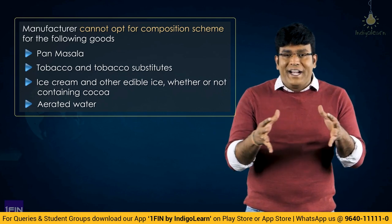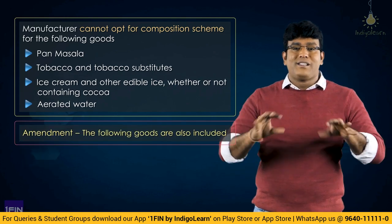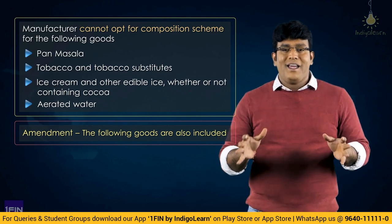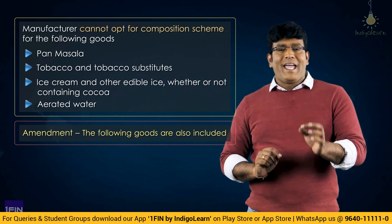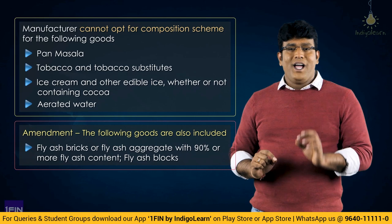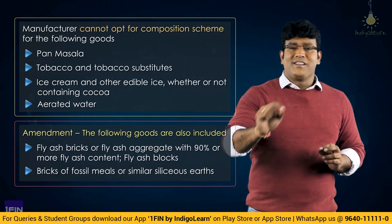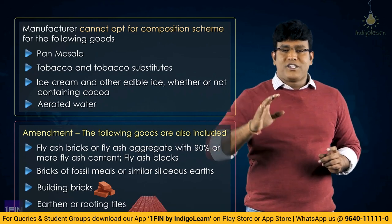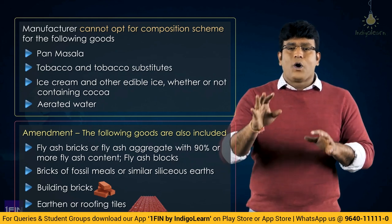They have widened the list from four to eight goods. Four more goods have been added by virtue of Notification No. 4/2022 dated 31st March 2022, wherein manufacturers of another four goods also cannot take the composition scheme. These four are: fly ash bricks or fly ash aggregate with 90% or more fly ash content or fly ash blocks; bricks of fossil metals or siliceous earths; building bricks; and earthen or roofing tiles. Manufacturers of any of these eight goods cannot take composition scheme under Section 10.